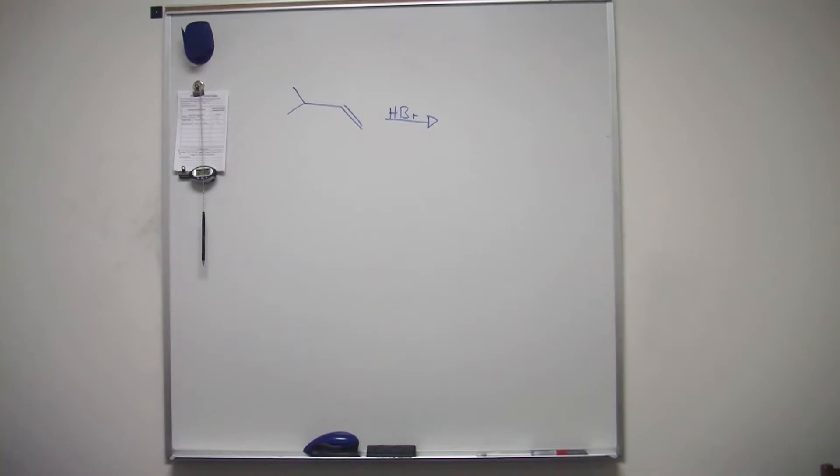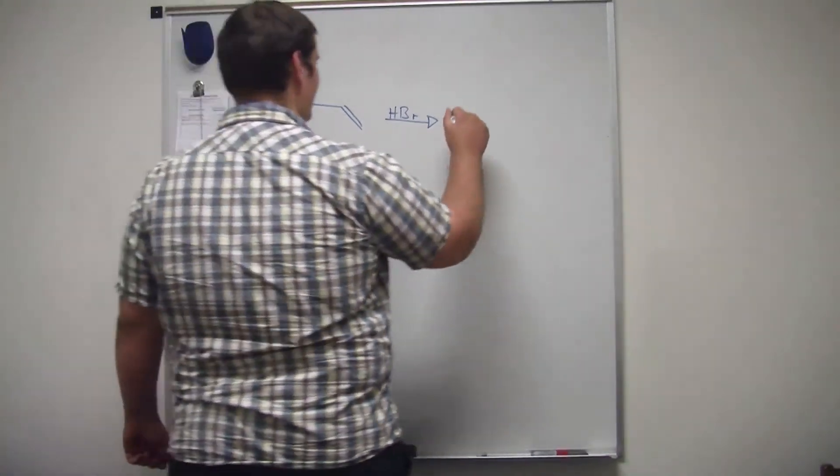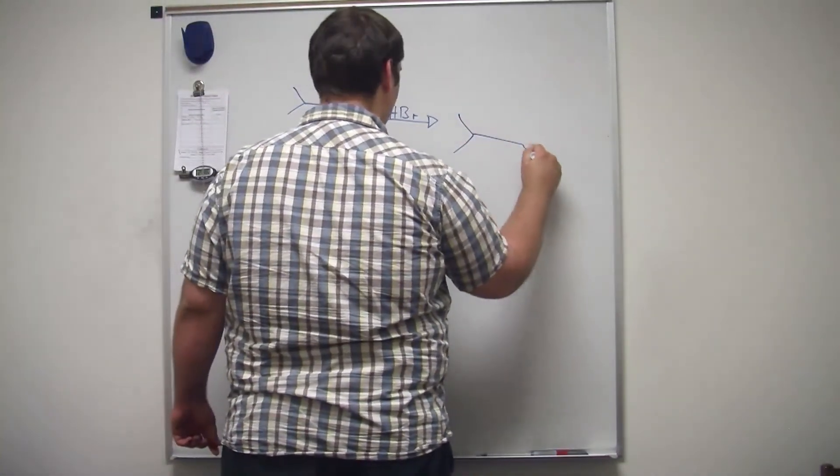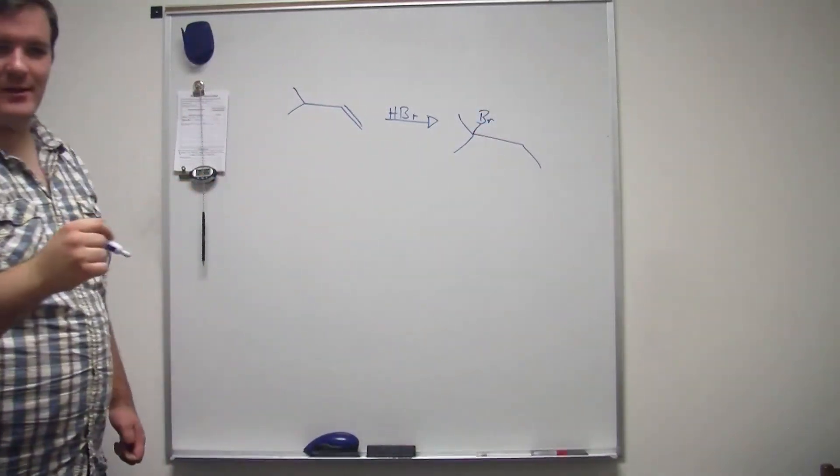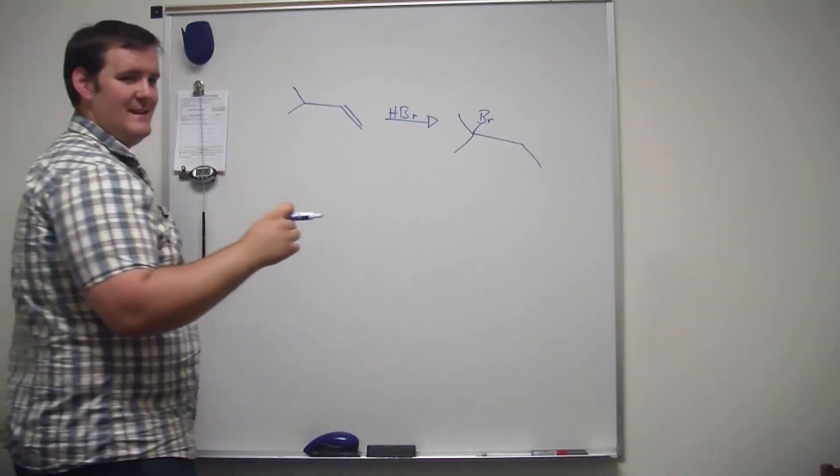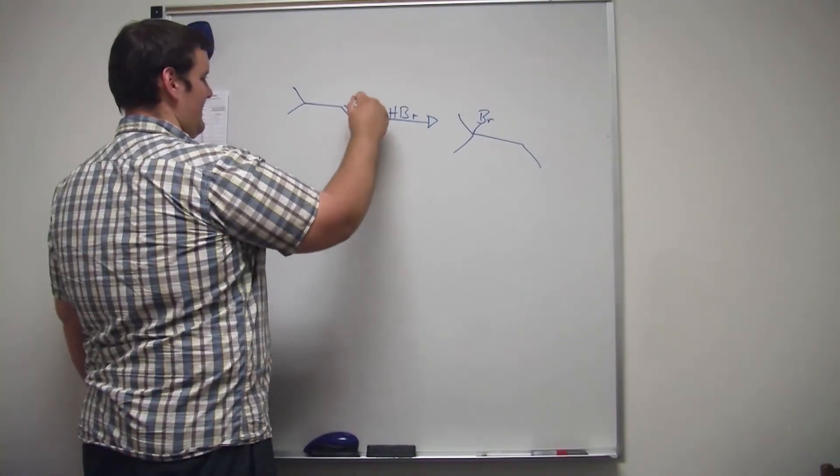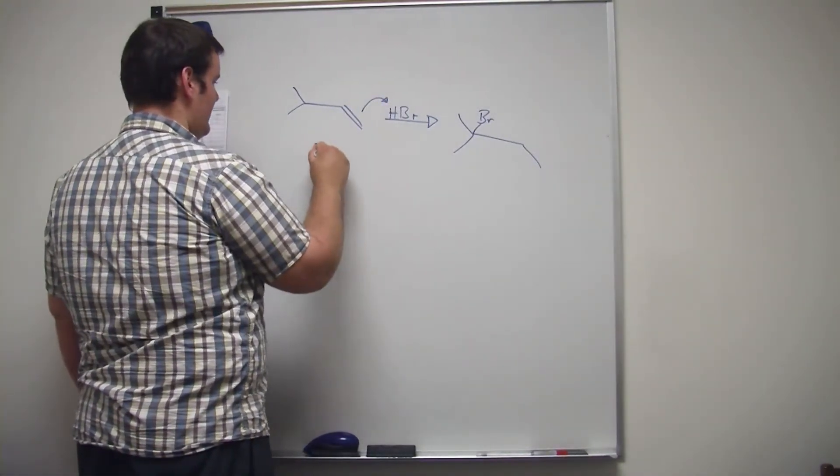So it shouldn't be. It actually... Oh no. Our product should be this guy. So what is the intermediate? Because the carbocation C2. Rearrangement. Tertiary.